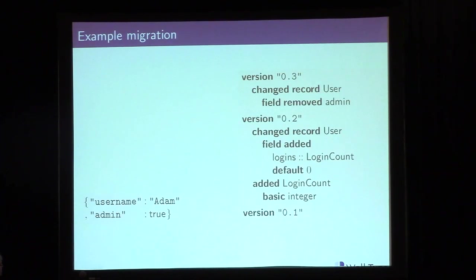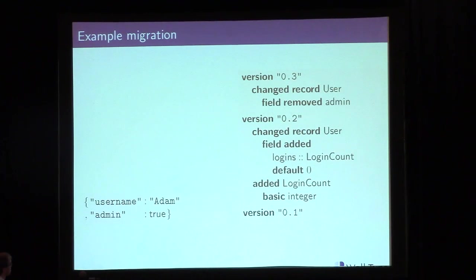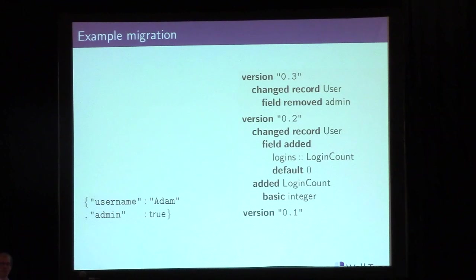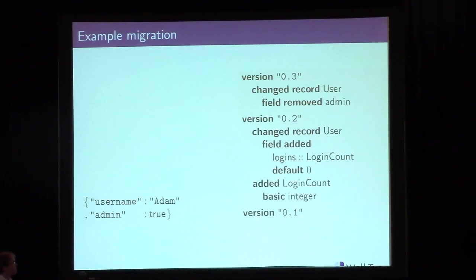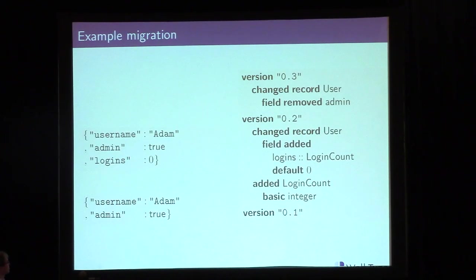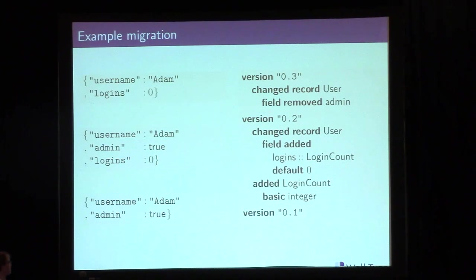A concrete example with real data: we have a little bit of data in version 0.1 of the schema with username and admin fields. When installing the application using version 0.3, the system automatically uses the changelog: it adds the logins field to all occurrences of the user record type to migrate to version 0.2, and then deletes the admin field to reach version 0.3. The choice of JSON as the generic representation isn't crucial and we're looking at switching it.